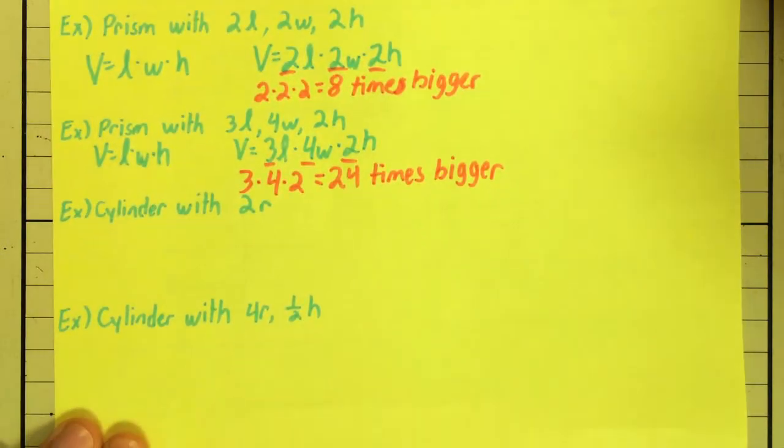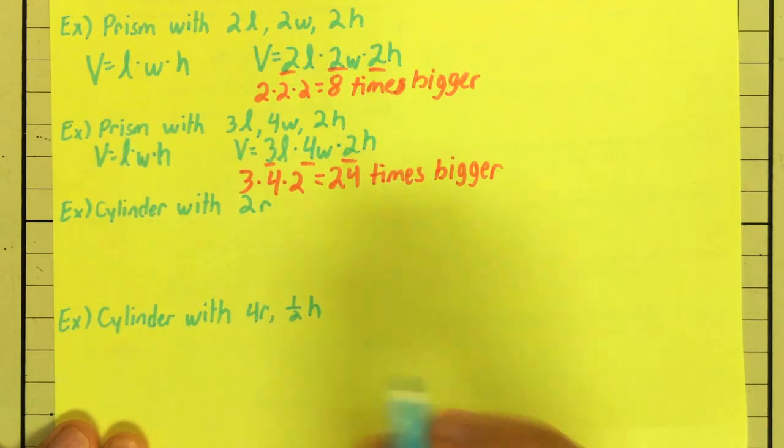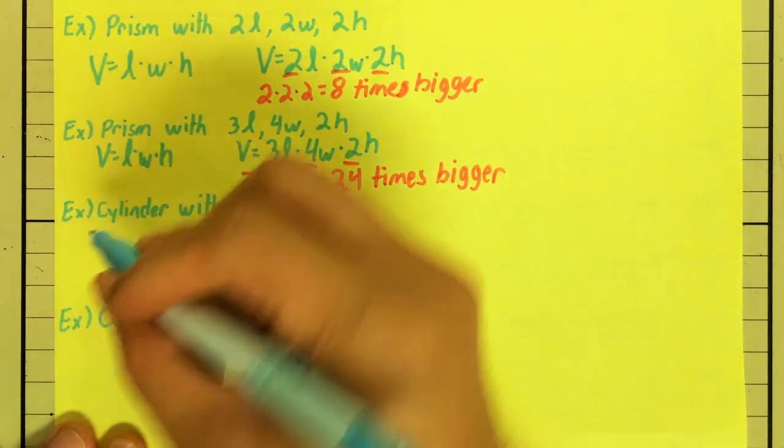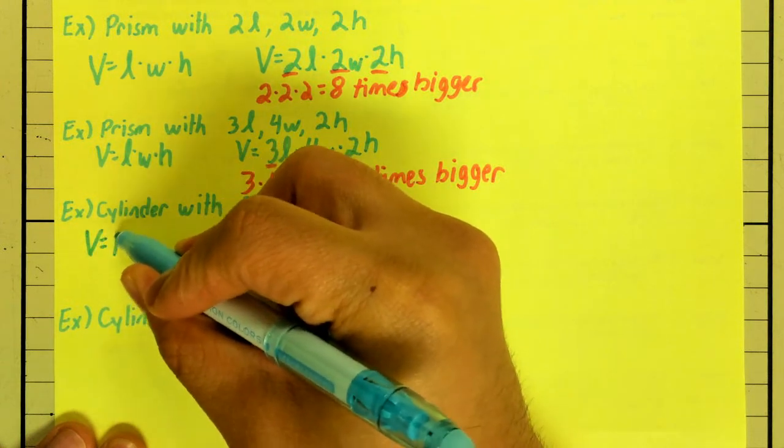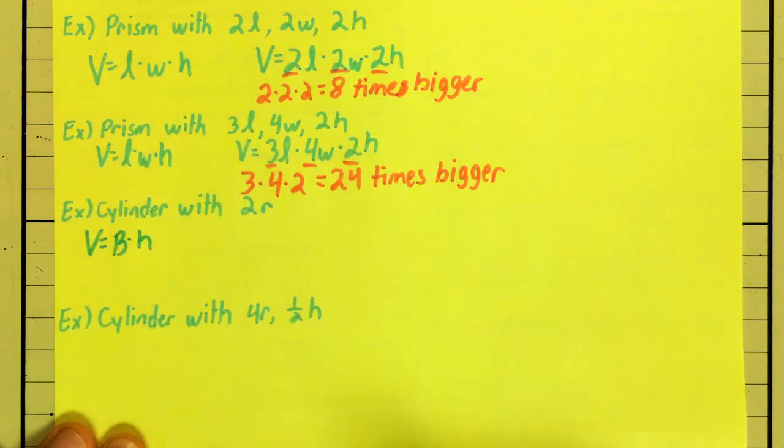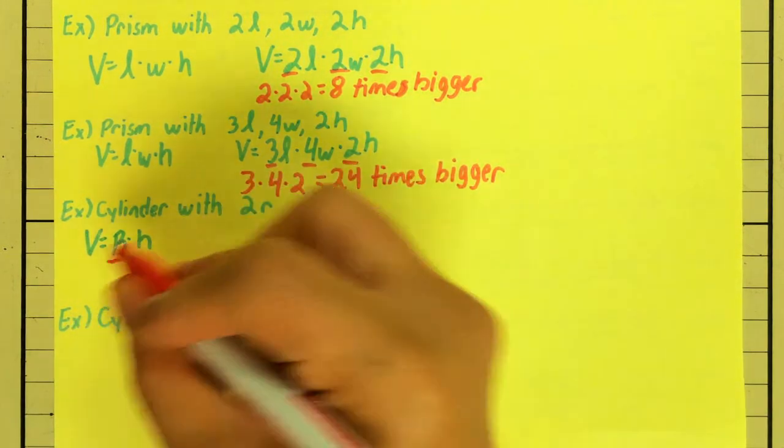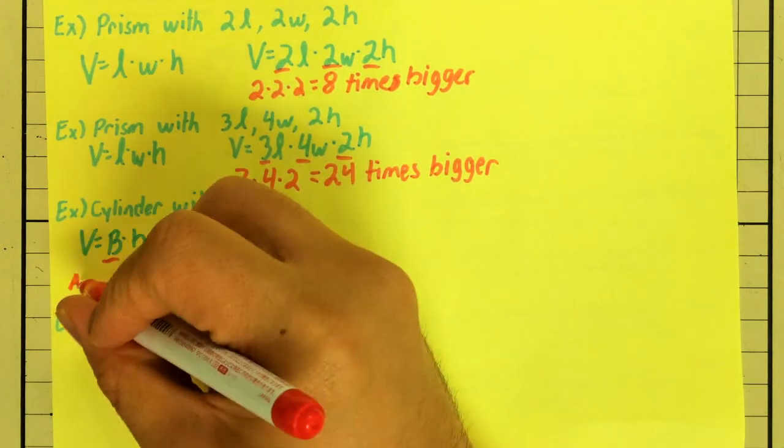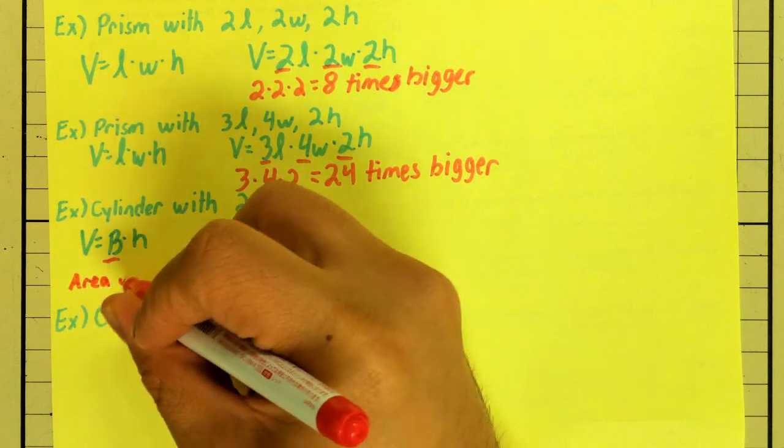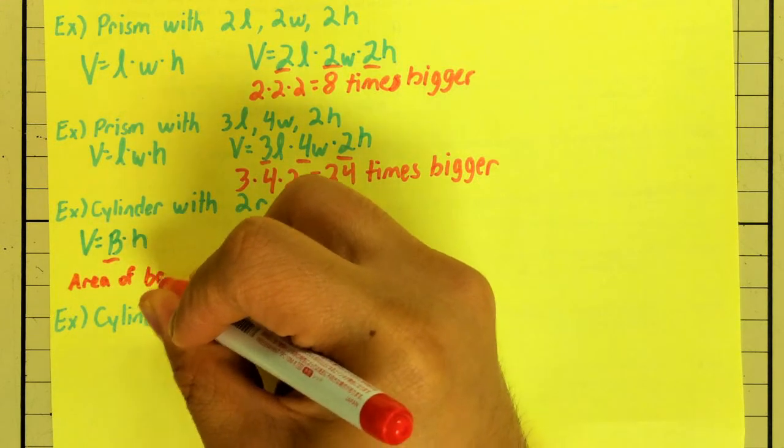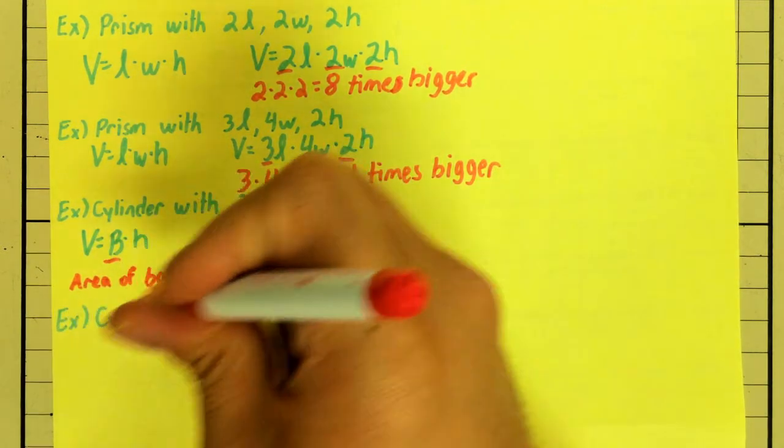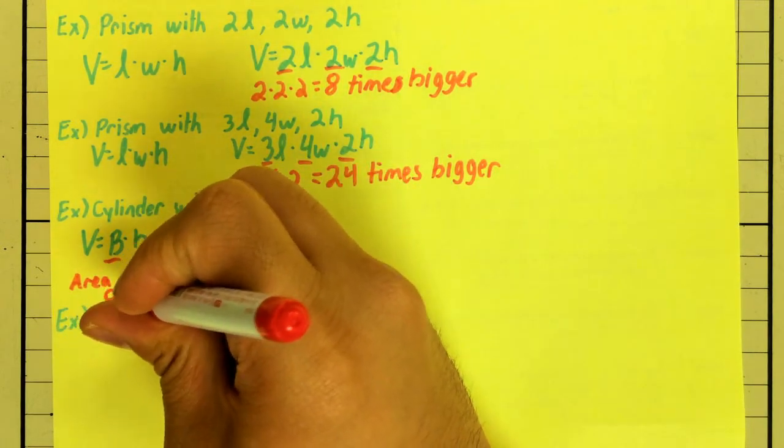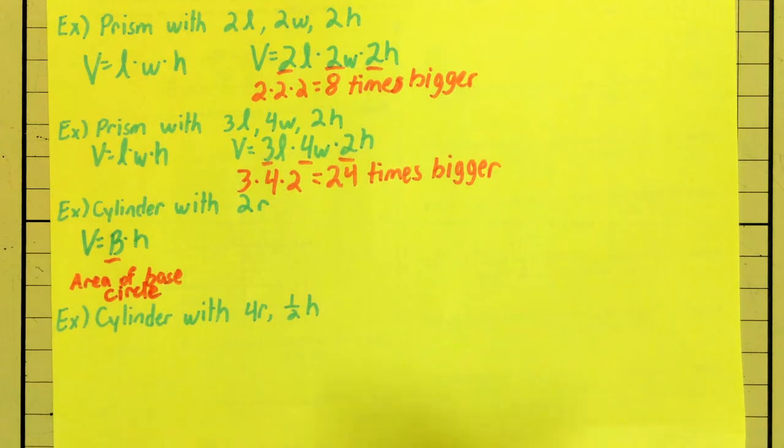So, what would happen to the volume of my cylinder if I have doubled the radius? Formula for volume of a cylinder is area of the base times the height. Right here, area of base.